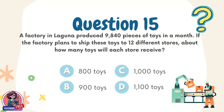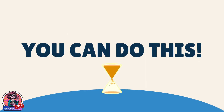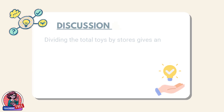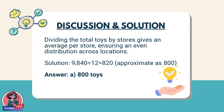Question 15. A factory in Laguna produced 9,840 pieces of toys in a month. If the factory plans to ship these toys to 12 different stores, about how many toys will each store receive? Choices: A. 800 toys, B. 900 toys, C. 1,000 toys, D. 1,100 toys. Discussion: Dividing the total toys by stores gives an average per store, ensuring even distribution across locations. Solution: 9,840 ÷ 12 = 820, approximate as 800. Answer: A. 800 toys.